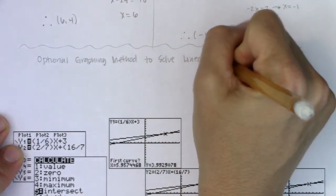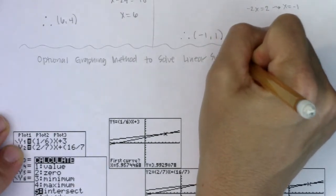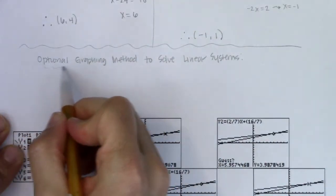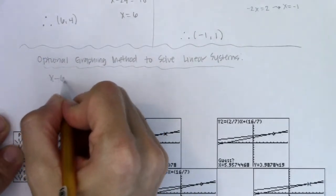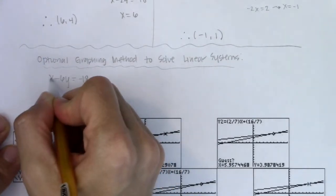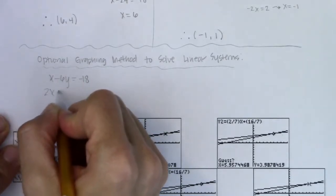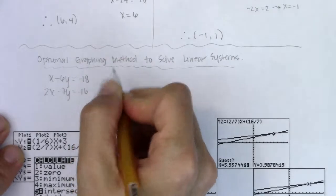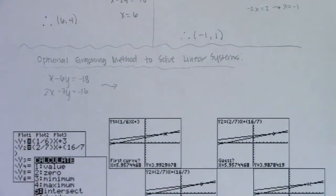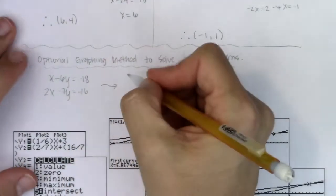So let's talk about optional graphing method to solve linear systems. And I only show you this just so you can see a different way of checking it on your calculator. Okay. If we had something like x minus 6y is equal to negative 18. And 2x minus 7y is equal to negative 16. I could put both of those equations into slope-intercept form.